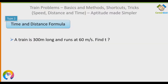Type 2 is the Time and Distance Formula. The formula to remember is S = D/T, where S is speed, D is distance, and T is time. This is the most common question in any aptitude exam. They will either give you distance and time and ask for speed, or give speed and time and ask for distance, or vice versa.